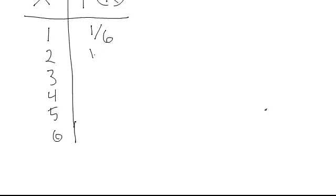So 1 sixth, 1 sixth, et cetera. So that's a probability distribution table for a discrete probability.